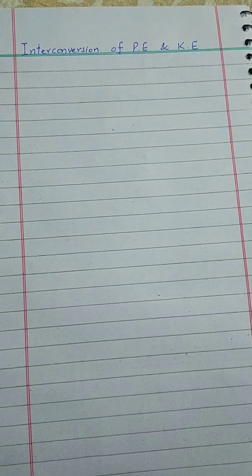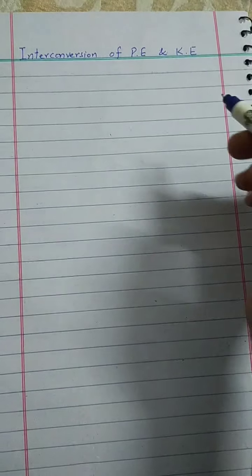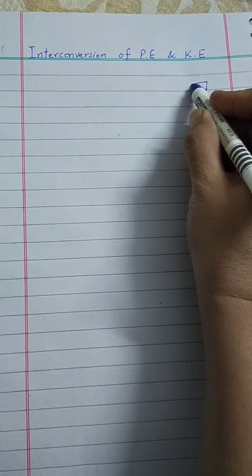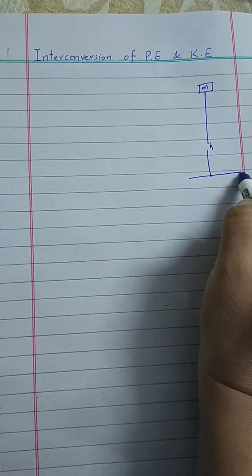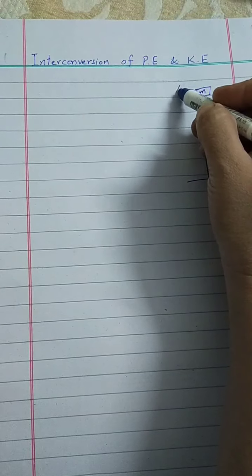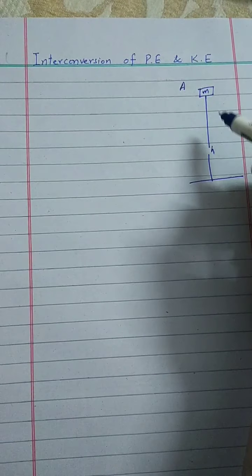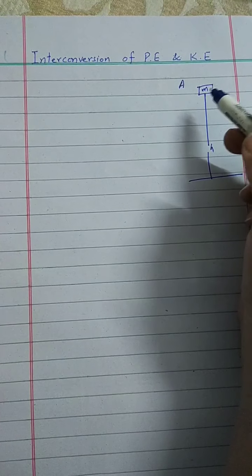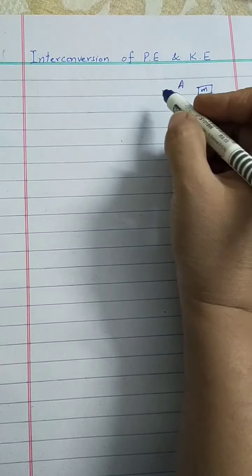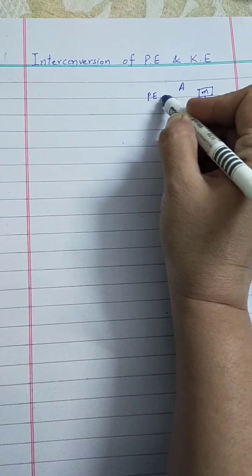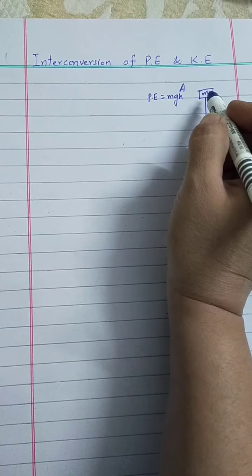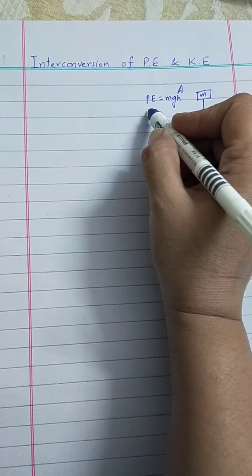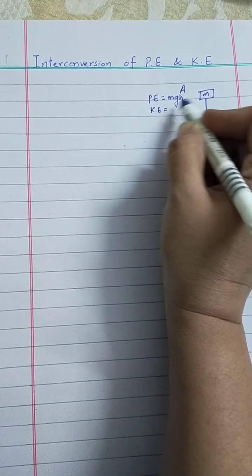Assalamu alaikum students. Today our topic is interconversion of potential energy and kinetic energy. Suppose we have an object with mass m at height h from the surface of Earth. This is position A. At this position, the body is at rest and at height h, so according to the definition of potential energy, it will have potential energy equal to mgh. Since the body is at rest with no velocity, the kinetic energy at point A is equal to zero.